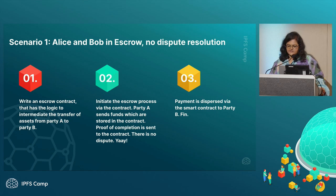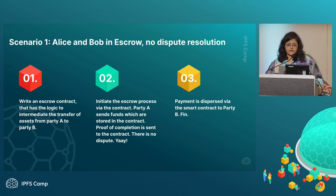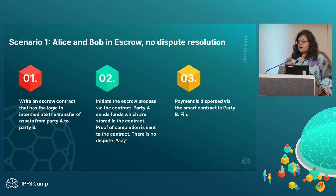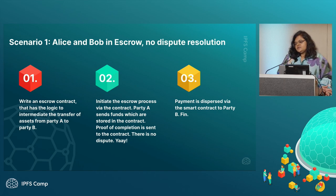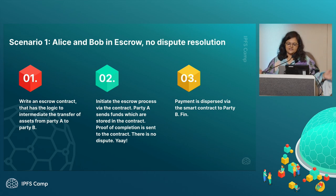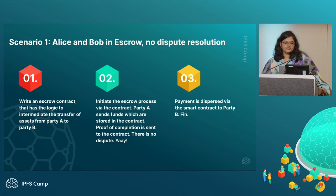Party A sends their funds to the contract, which are stored in the contract instead of a third party having access to them. Upon completion, there is a proof or a call triggered to the smart contract, and there is no dispute. Life is chill — Alice and Bob are nice people, they exchange money and assets, and payment is now disbursed via the smart contract to party B. This is a great system, but it's a best case scenario — an ideal scenario where there is no dispute and everything is smooth.